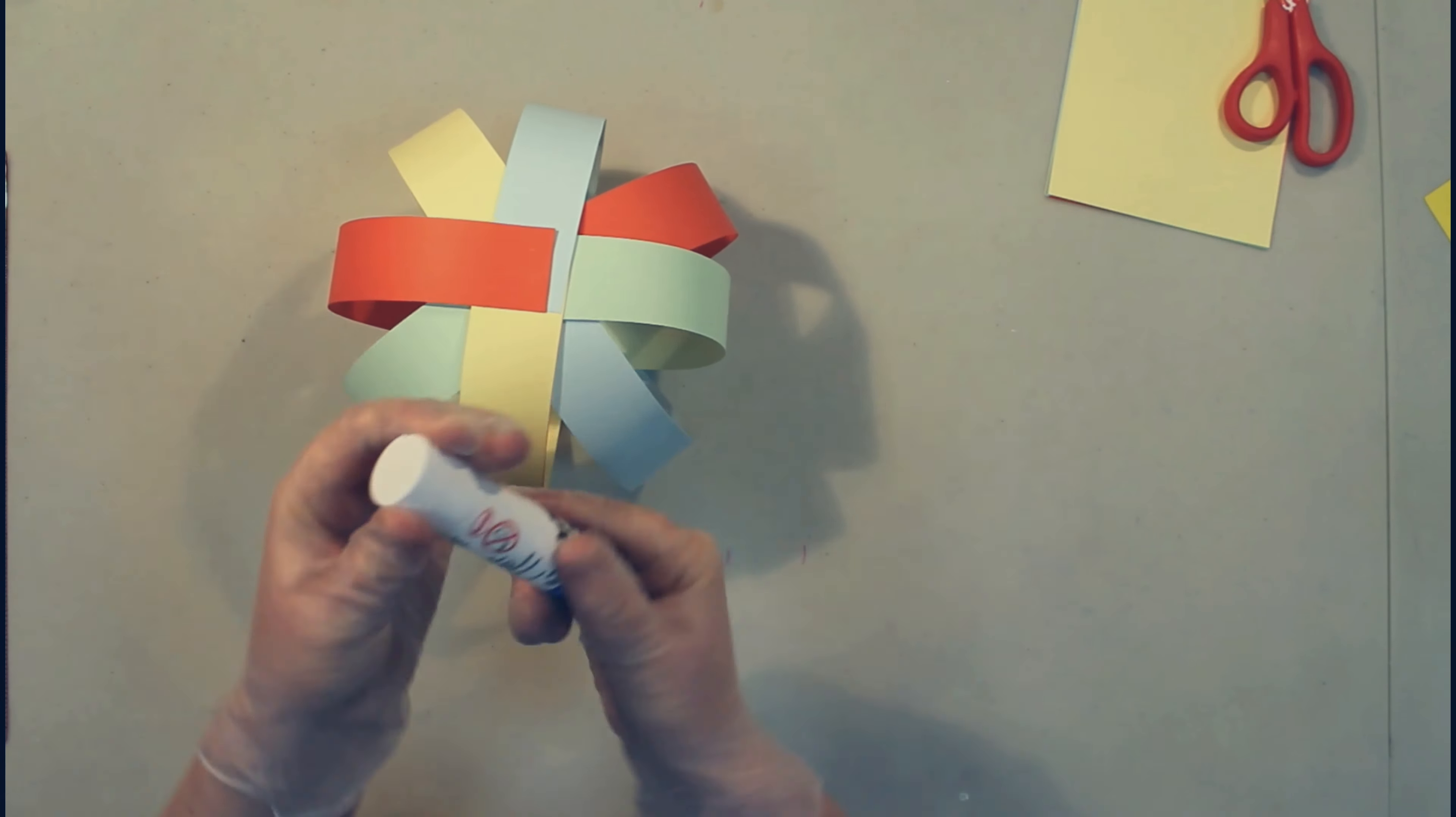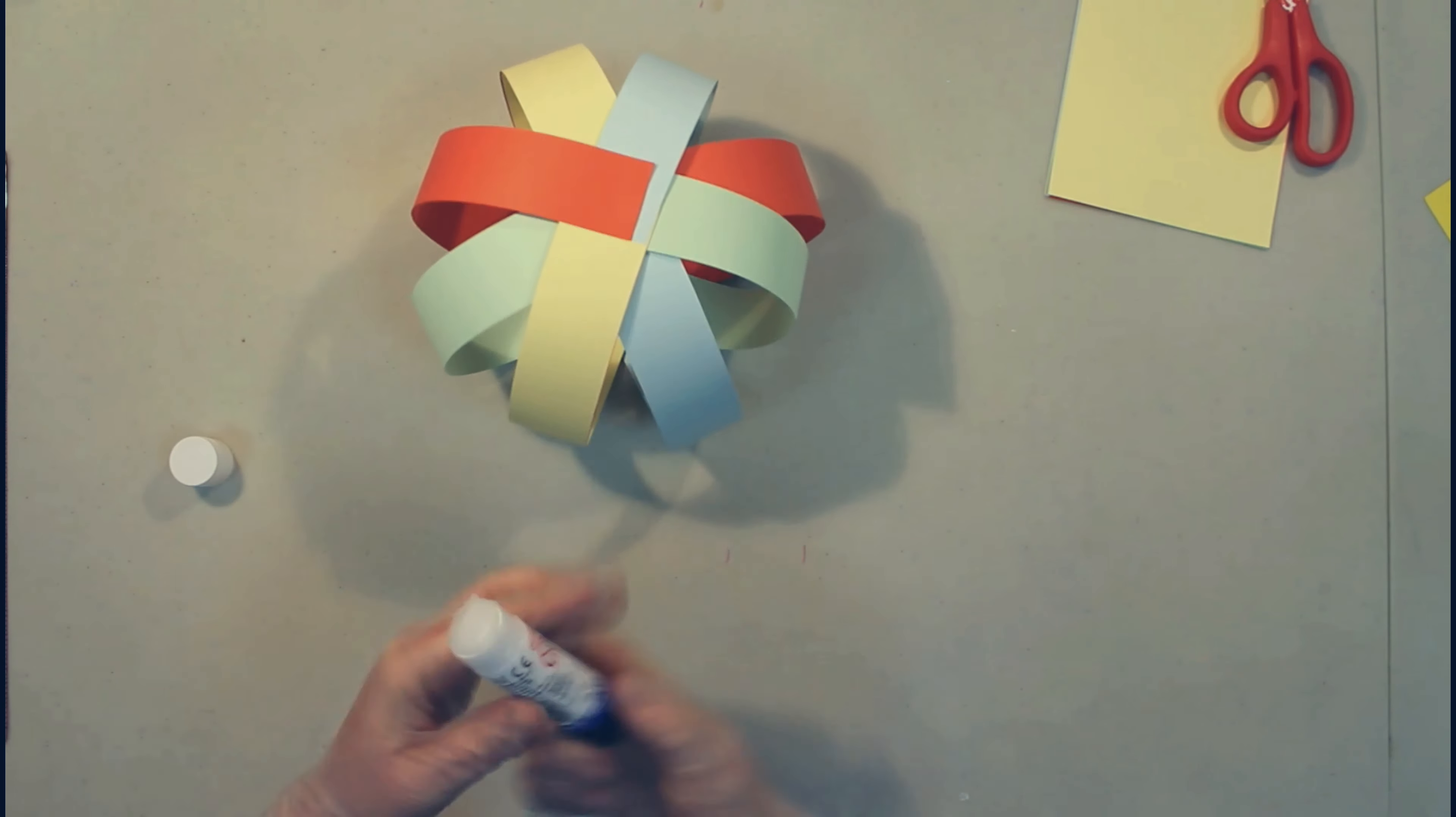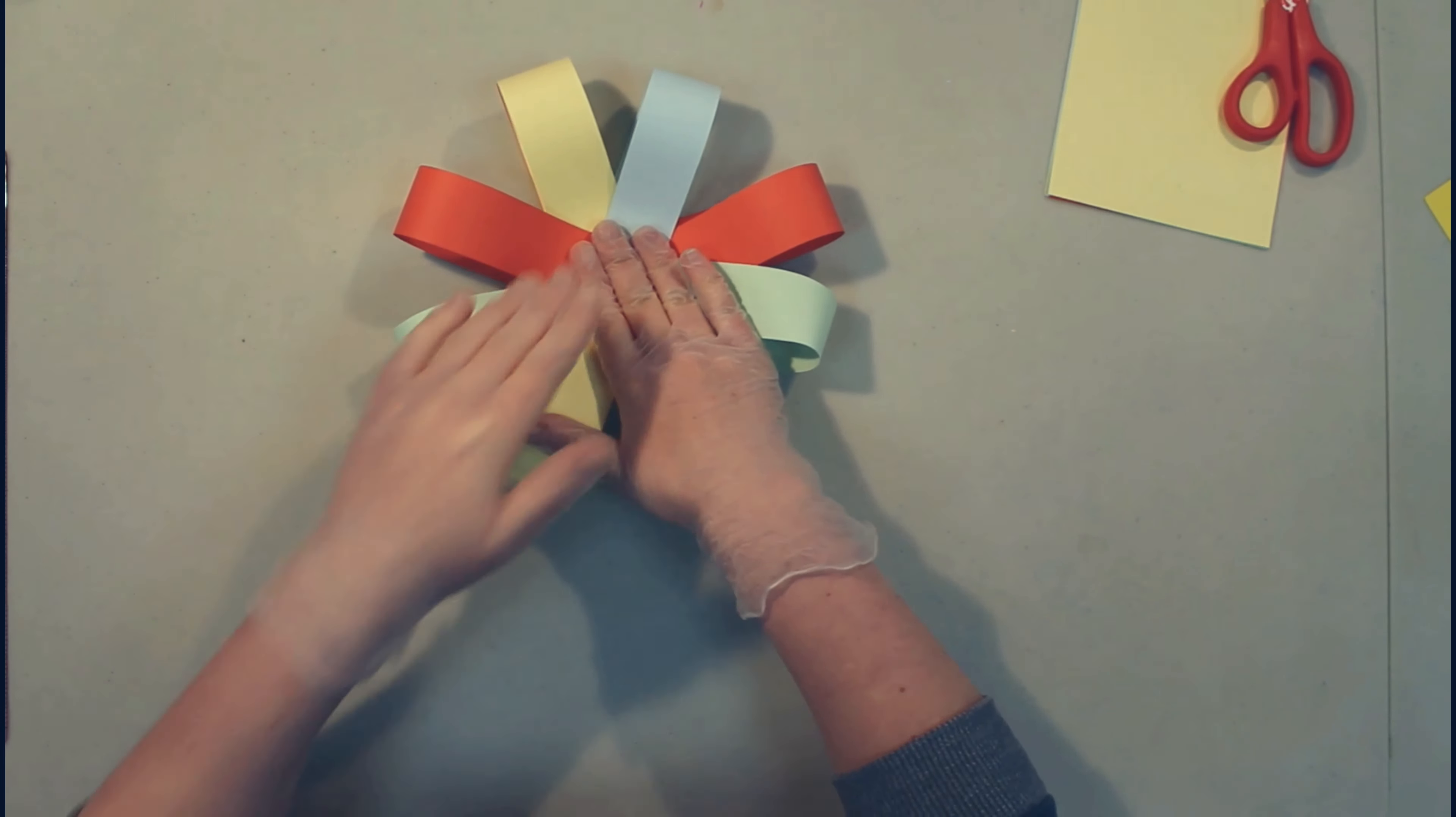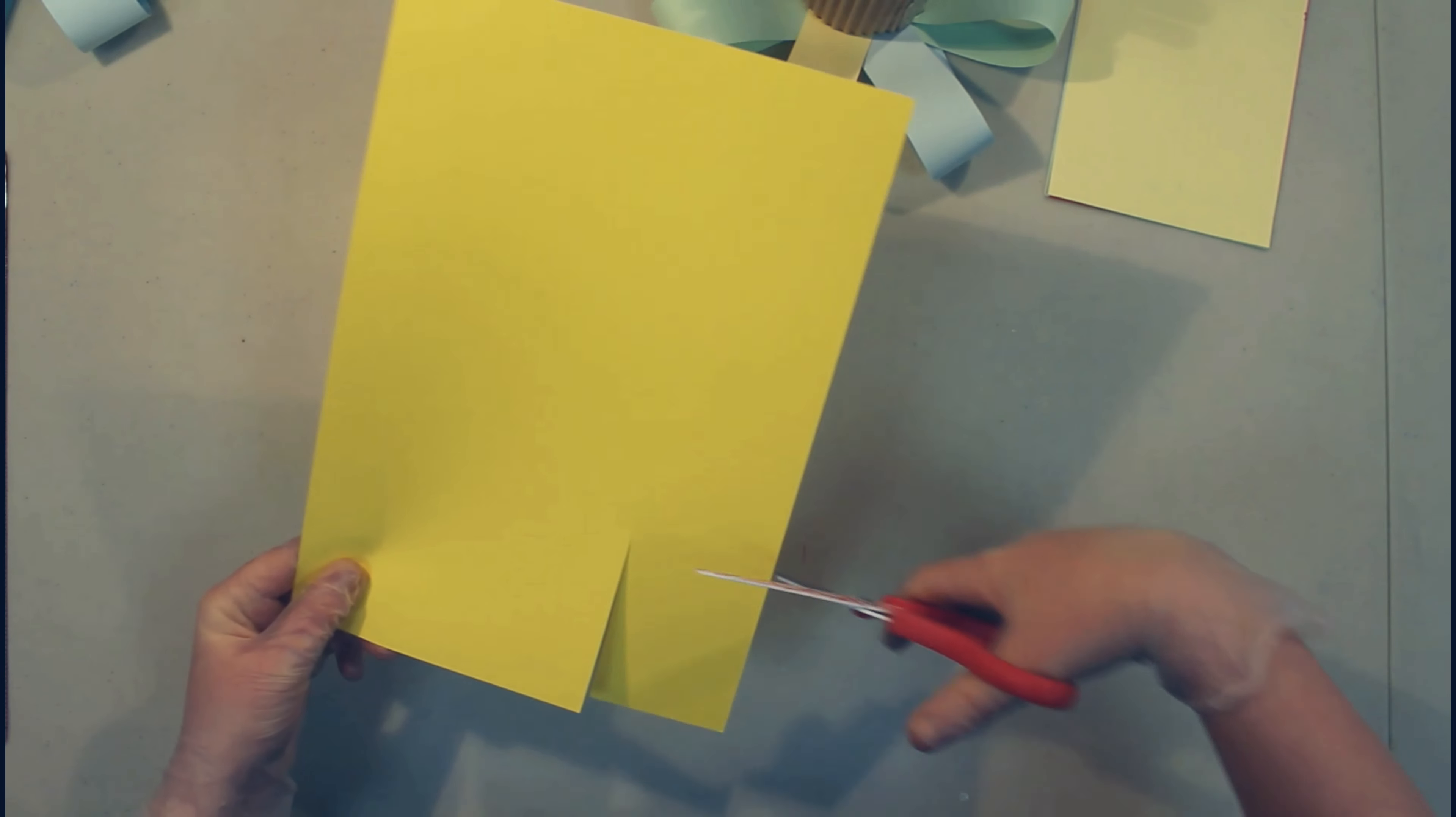And once that's done we need a little bit of glue in the center. This is going to hold all the strips down to resemble a flower. Now just add something heavy to weigh it down and we'll start cutting out the center.